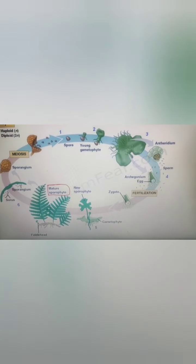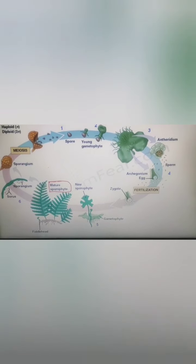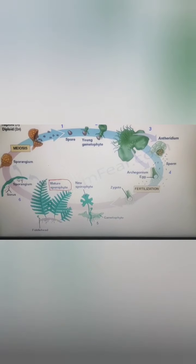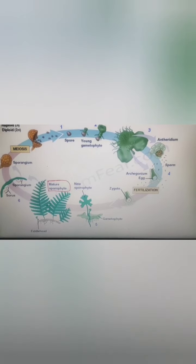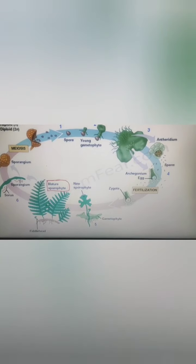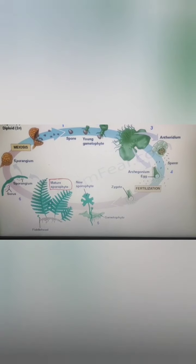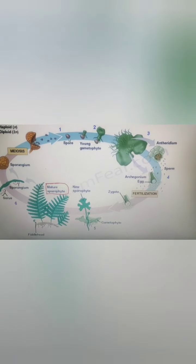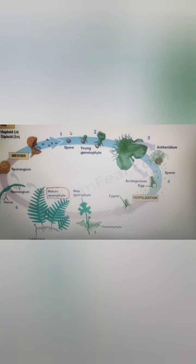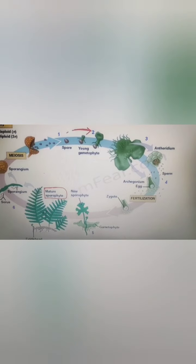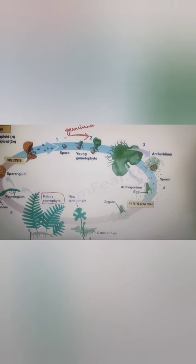Here is the life cycle of the fern. We can see a matured fern, which is called the mature sporophyte. These mature sporophytes will have sporangium, and the sporangium consists of spores. The leaf-like appendages in which the sporangia are present are the sporophylls. Inside the sporangium are the spores, and when the spores are released, they germinate to form the gametophyte — first a young gametophyte, then a mature gametophyte.